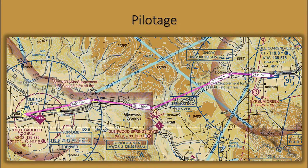Pilotage is navigation by reference to landmarks, sometimes referred to as checkpoints. It is a method of navigation that can be used on any course that has adequate landmarks. The checkpoints selected should be prominent features common to the area of flight. Choose checkpoints like towns and airfields that can be readily identified by other features such as roads, rivers, railroad tracks, lakes, and power lines. In the example image, a flight from Eagle County to Rifle, Colorado could be accomplished by following Interstate 70, with towns and road intersections along the flight path selected to track flight progress.